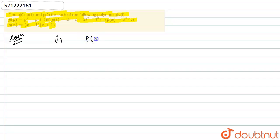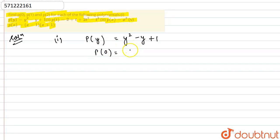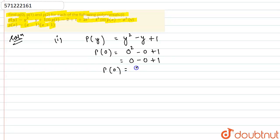In the first part, we are given polynomial p(y) as y squared minus y plus 1. Now firstly I will find p(0), so I will put y equals to 0 here. So it will become 0 squared minus 0 plus 1, or 0 minus 0 plus 1. So I am getting p(0) as 1.